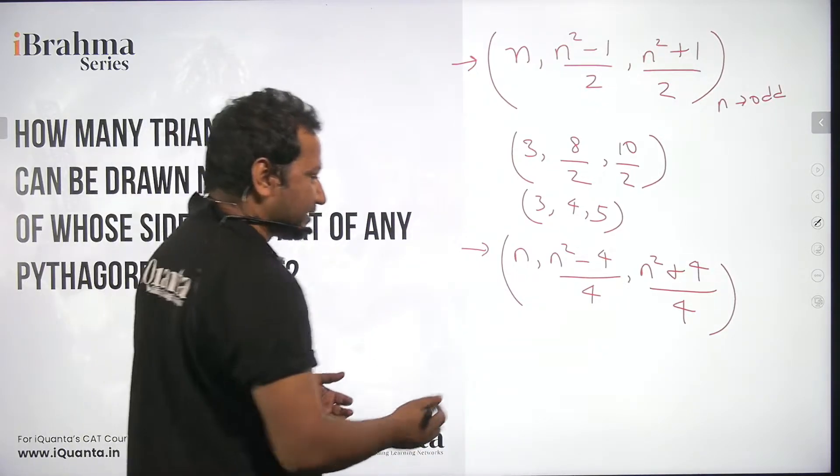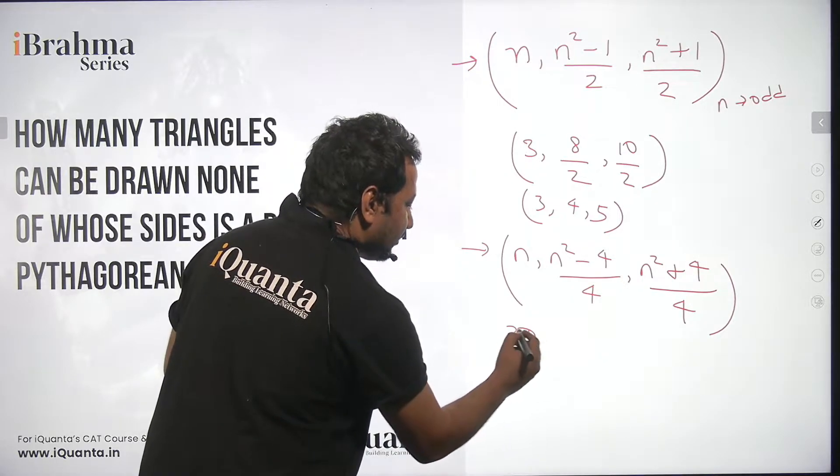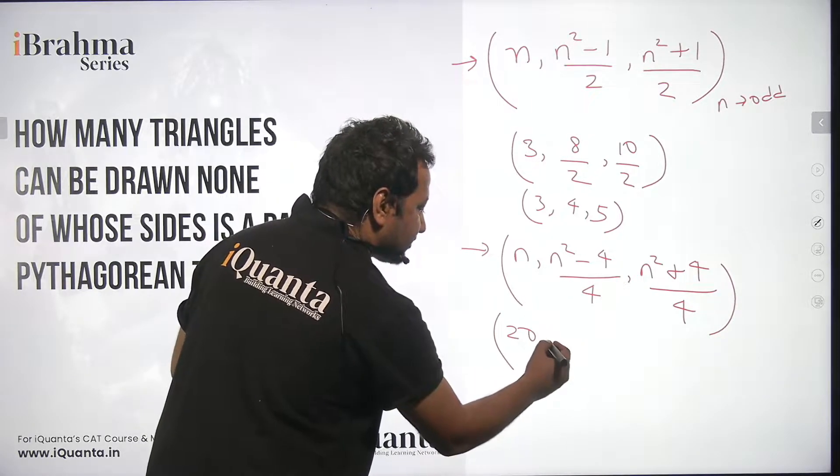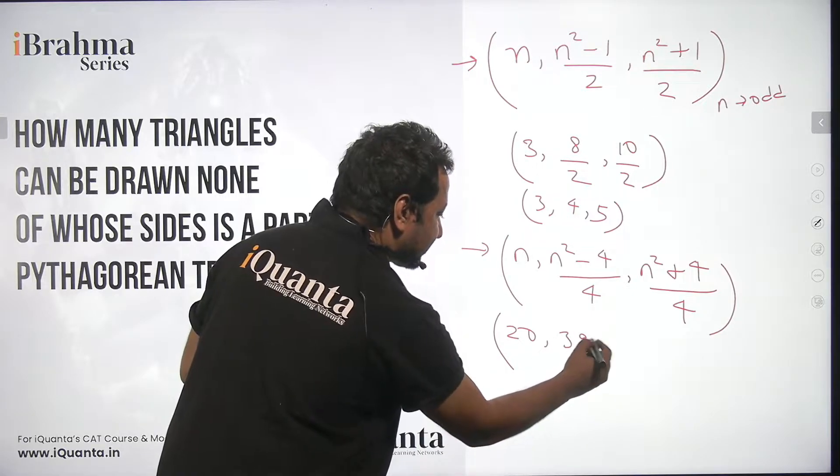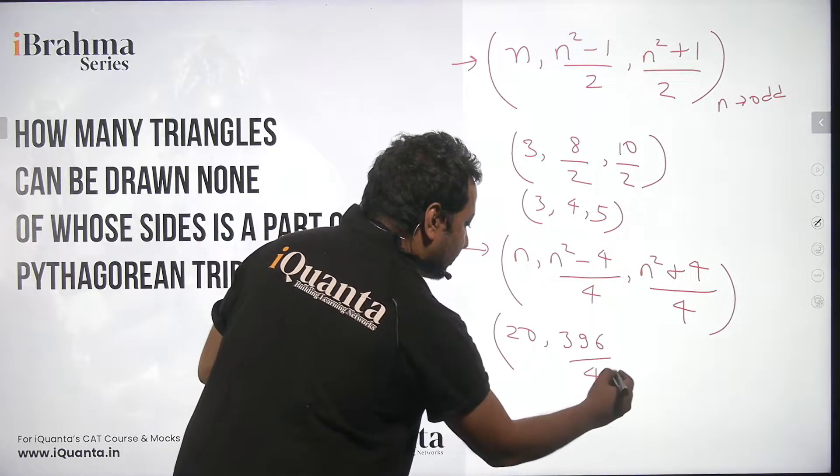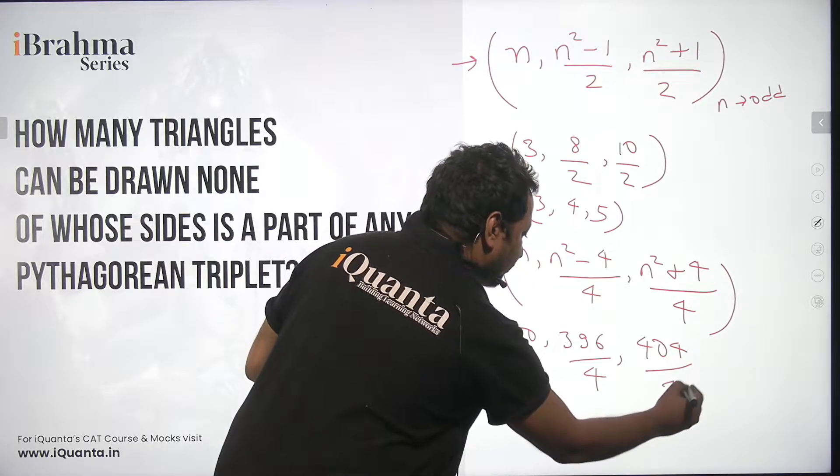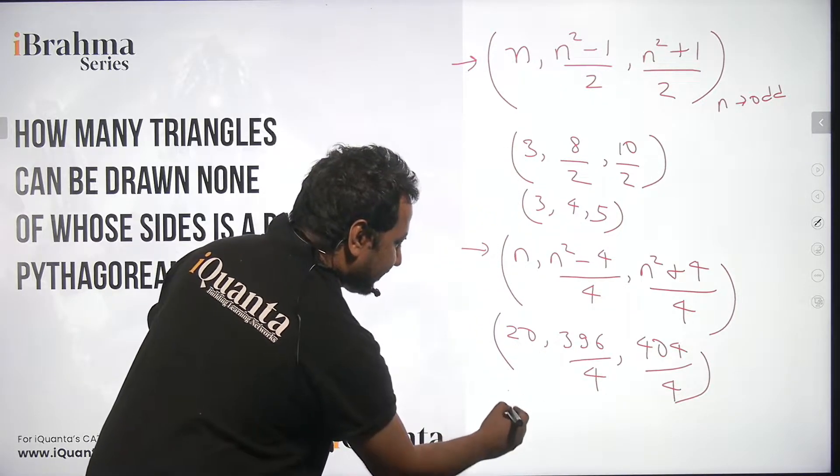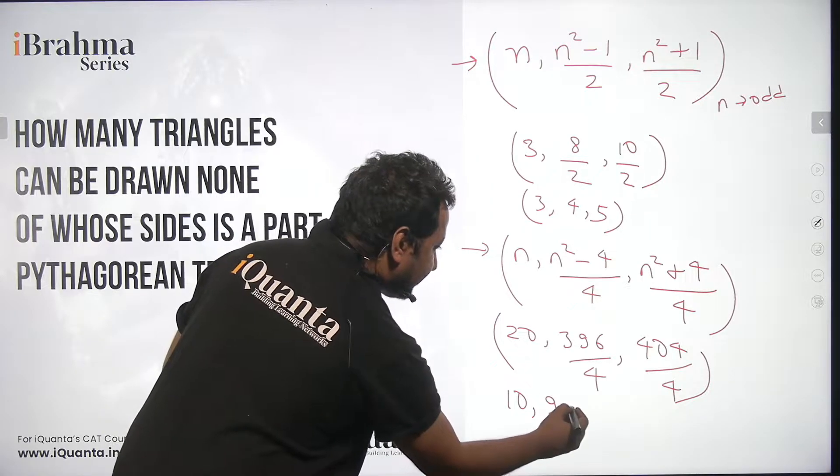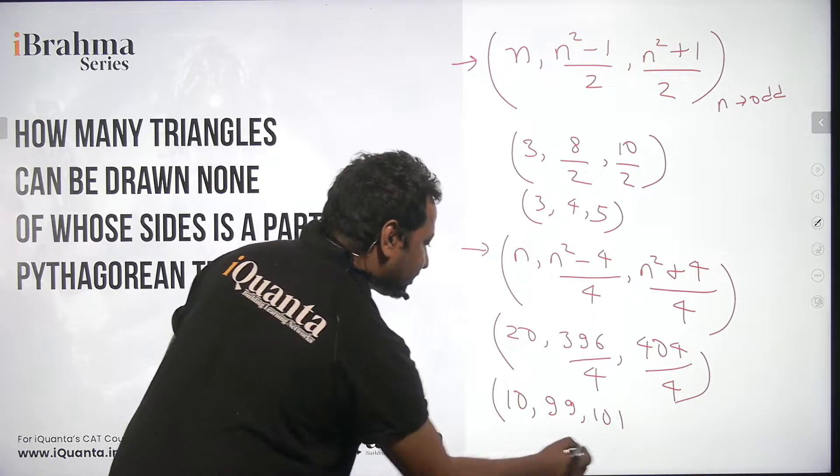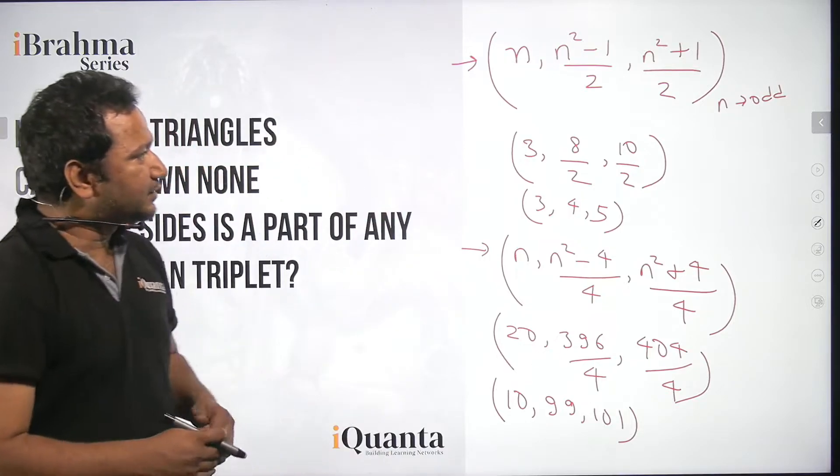I will give you an example. If n is equal to 20, what do we get? 20 square is 400 minus 4 is 396 whole upon 4 and similarly here I will get 404 upon 4. On solving this we will get 20, 99 and 101. So this is just a repetition of what we did. Just a quick recapitulation.